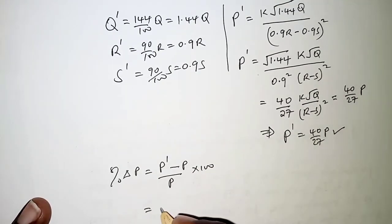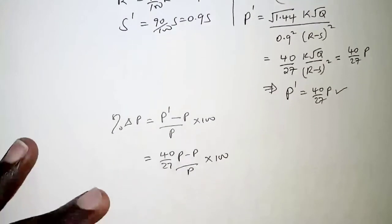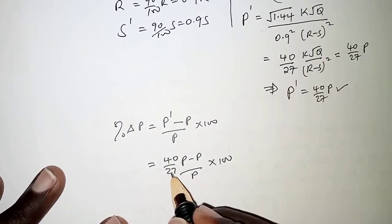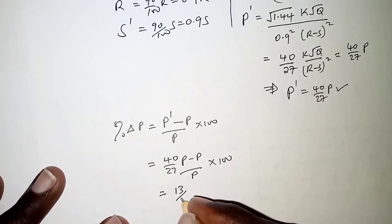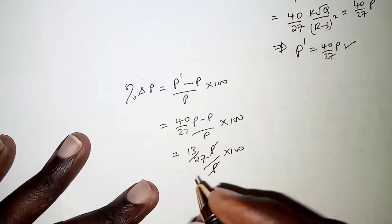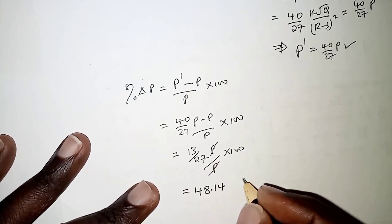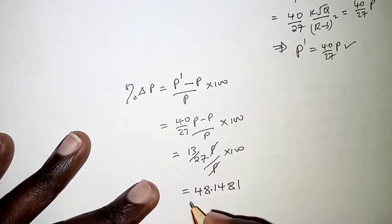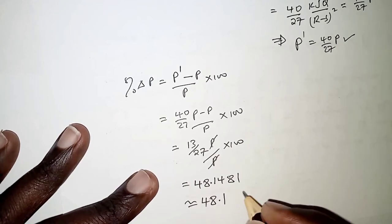So here we'll have the new value is 40 over 27 P minus P over P times 100. So 40 over 27 P minus P, that should give us 13 over 27 P over P times 100. These cancel and finally we are able to get 48.1481.